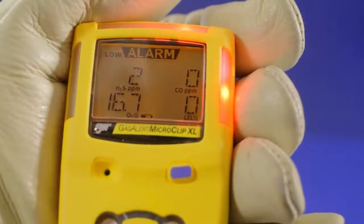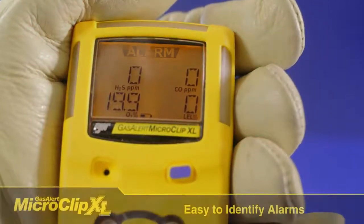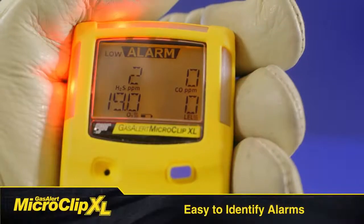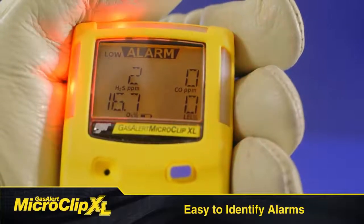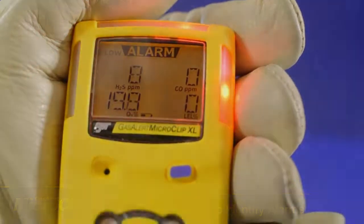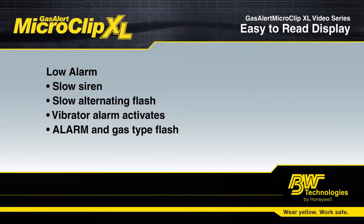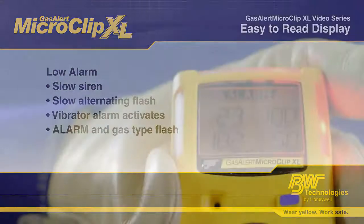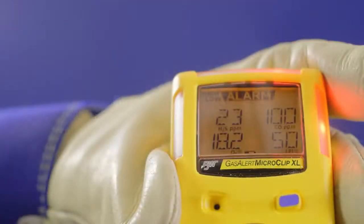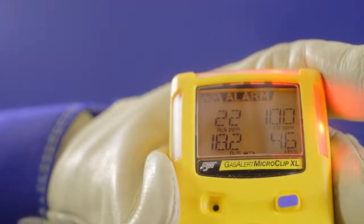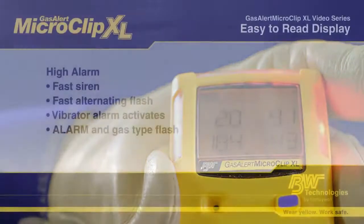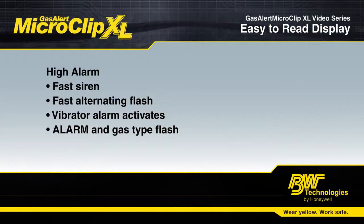In addition to the audible, visual, and vibrating alarm, 'alarm' will flash at the top of the screen. The alarm type will also appear. Low alarms are instantaneous alarms — take appropriate actions in line with your on-site procedures in the event your detector goes into low alarm. High alarms are also an instantaneous alarm and are a secondary warning level.